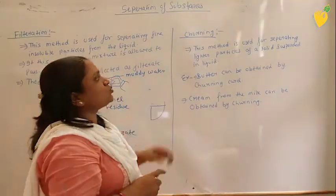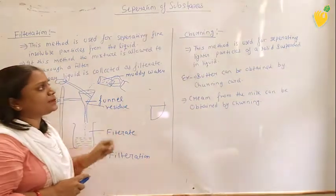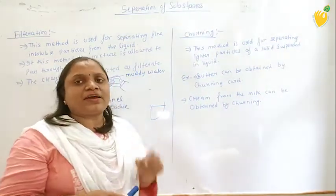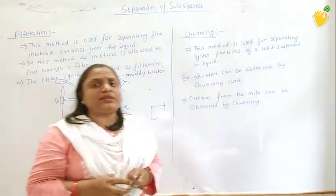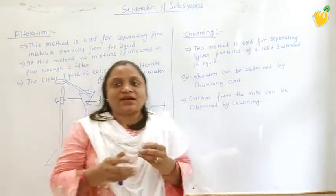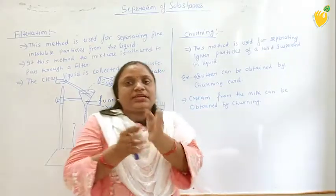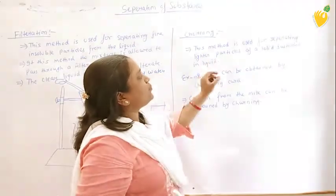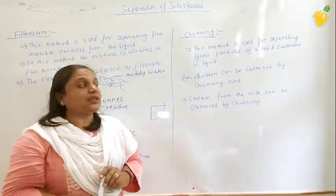The next process is called churning. Churning is very similar to the process of filtration, but this process is used for separating very fine particles. Have you seen your mother preparing mattha? She does something like this — that is called churning. With the help of this process, very light solid particles can be separated from a liquid.